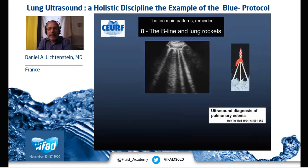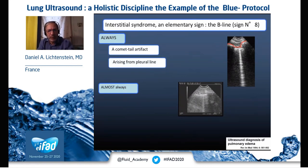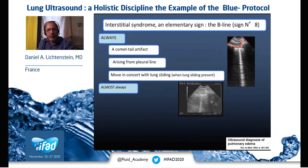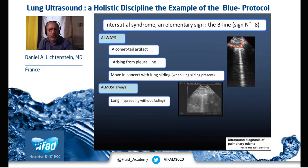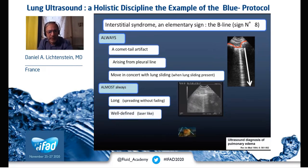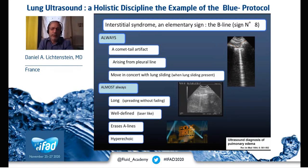Now the B-line and its relation with lung rockets. The B-line is the elementary sign of interstitial syndrome. It is always a comet-tail artifact, always arising from the pleural line, and always moves with lung sliding — provided there is lung sliding. That makes three criteria; we now have four criteria, which are almost always present. It is longer without fading, well-defined like a laser, it erases the A-lines in those areas, and it is hyperechoic like the pleural line.